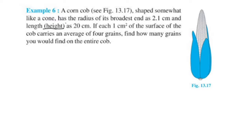A corn cob curve shape, somewhat like a cone, has the radius of its broadest end as 2.1 cm and length as 20 cm. The length here is the height.